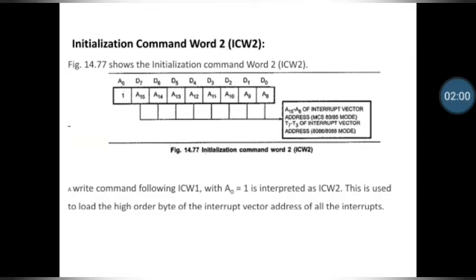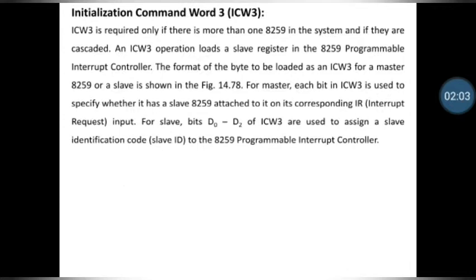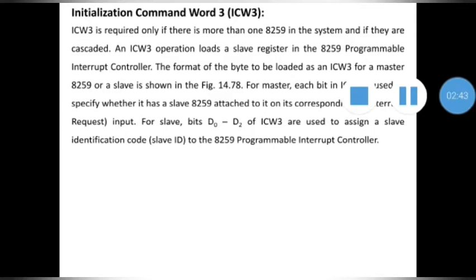Now we will discuss initialization command word 3. ICW3 is required only if there is more than one 8259 in the system, meaning the 8259 is working in cascaded mode. The ICW3 operation loads a slave register in the programmable interrupt controller. The format of the byte to be loaded in ICW3, both in master mode and slave mode, is shown in the figure that I will show in the next slide.